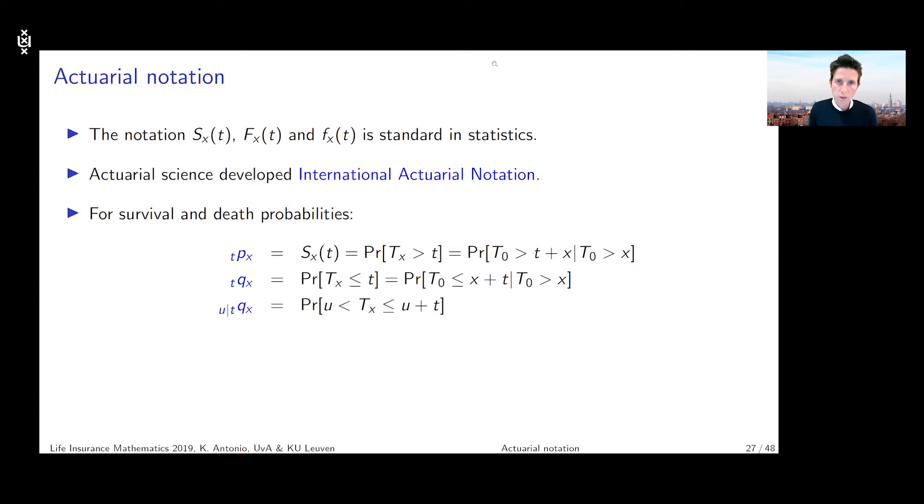So what we're interested in is the deferred mortality probability, which captures the probability that T is taking a value between u and u plus t. So if I would picture this on a timeline, that's always a good recommendation for you to do. Then I'm looking at an individual age x at time zero.